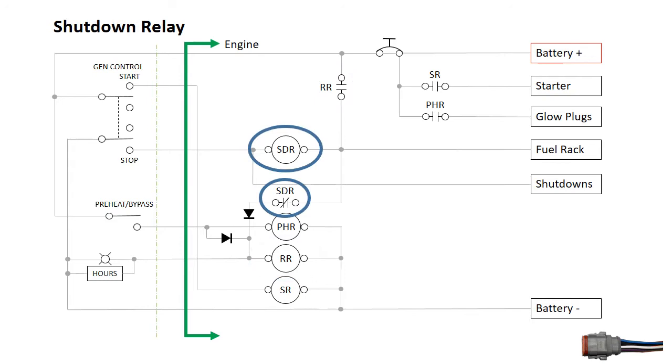The shutdown relay uses normally closed contacts to keep the run relay coil latched on while the engine is running. The blocking diodes prevent control power from feeding in the wrong direction during startup and operation.